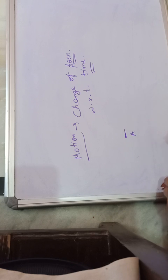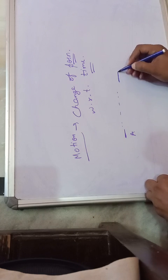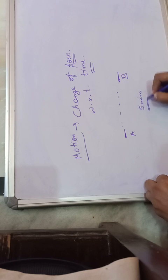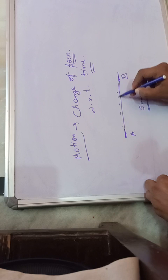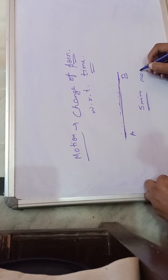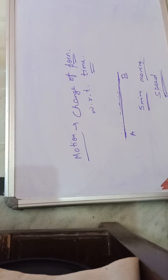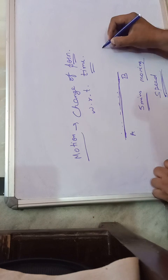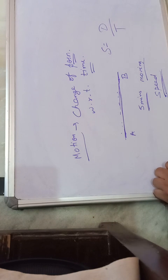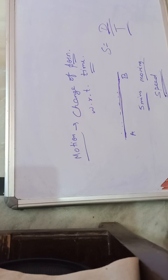Suppose a car was at point A and after 5 minutes it reached point B - it covered some distance and had some speed. We can measure the rate of motion with the term speed. Speed is equal to distance over time. The change of position with respect to time is what we call speed.